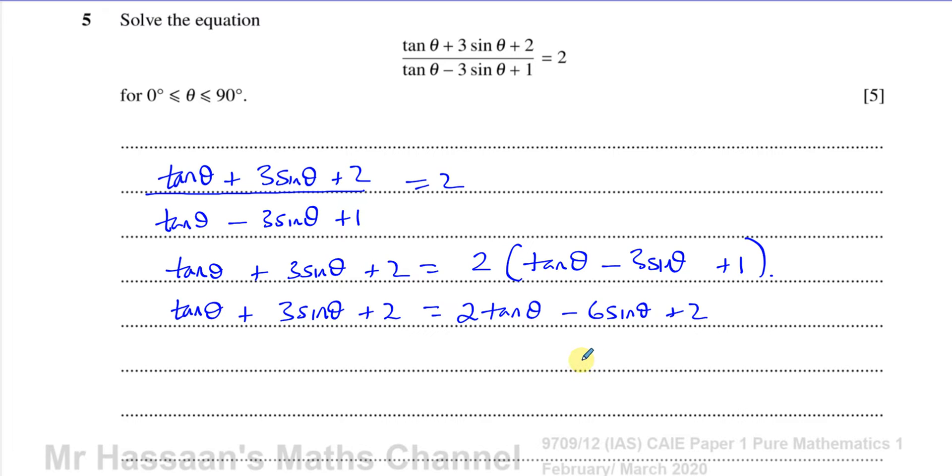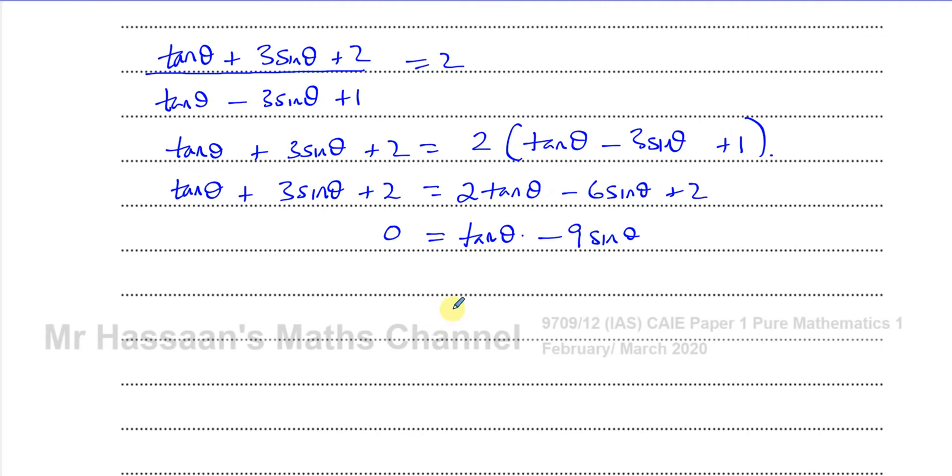Now I can see that you have like terms. So I'm going to subtract tan theta from both sides. This gives me 1 tan theta over here. I'm going to subtract 3 sin theta from both sides. That gives me minus 9 sin theta over here. And I'm going to subtract 2 from both sides. So that gives me 0 over there. So now I've got something that looks a bit more friendly for us to try to solve.